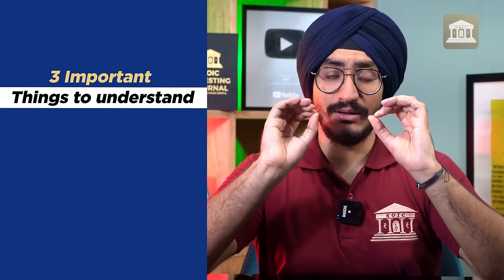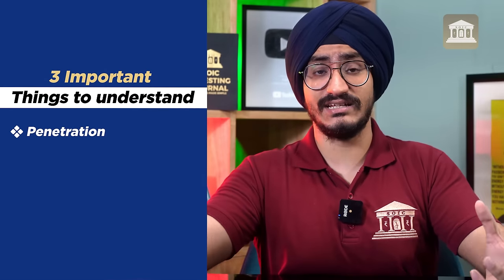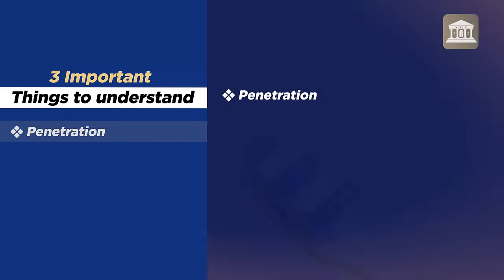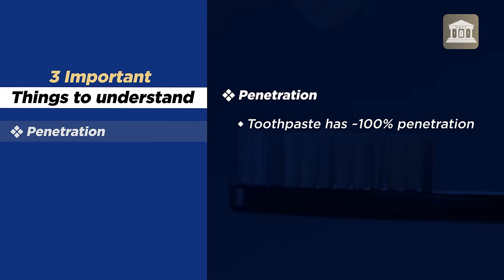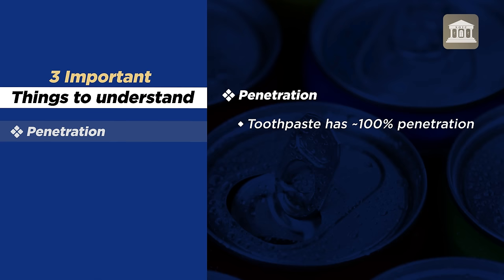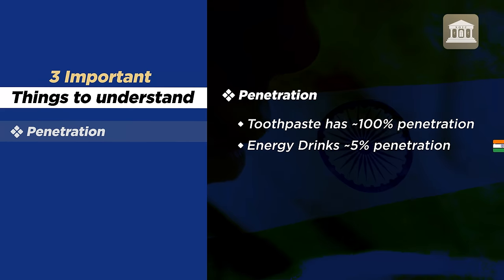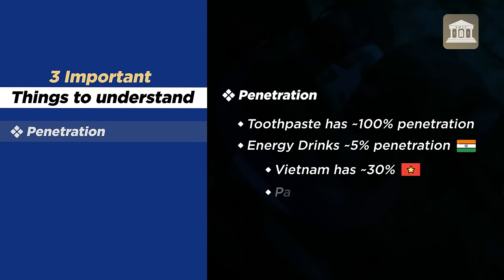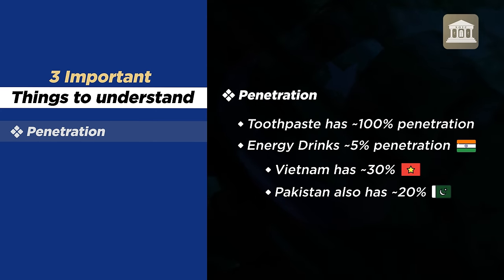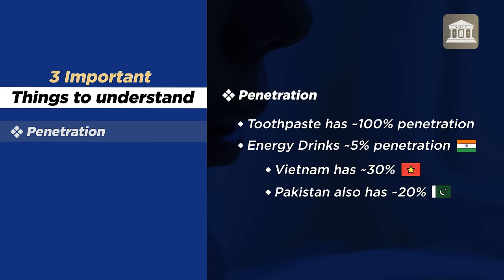What are those three things? One is penetration — penetration means the degree to which a category has been adopted. For example, toothpaste is almost 100% penetration because everyone uses toothpaste, so that is a well-penetrated category. Whereas if we talk about energy drinks today, penetration in India is low, whereas in Vietnam it is 30% and in Pakistan it is 20%. So there we get an idea that it is an under-penetrated category. We will talk about penetration of categories.